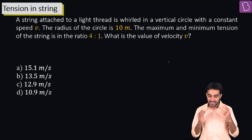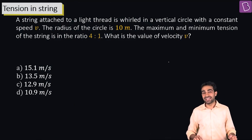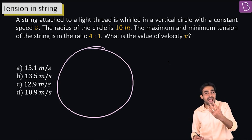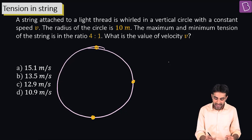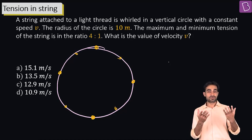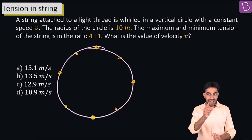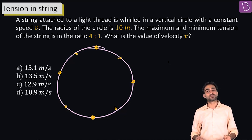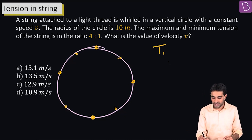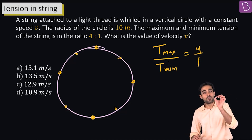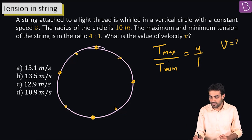A string attached to a light object is whirled in a vertical circle with constant speed v. The radius of the circle is 10 m. The maximum and minimum tension in the string are in the ratio 4:1. We need to find the speed v of the particle.